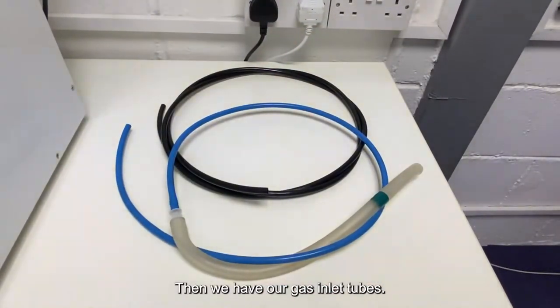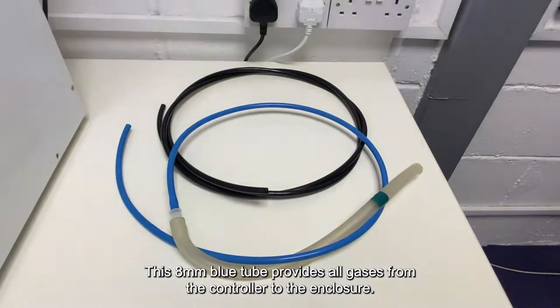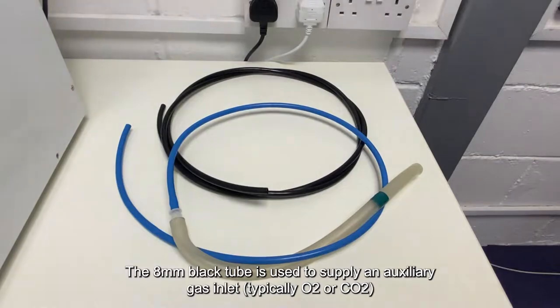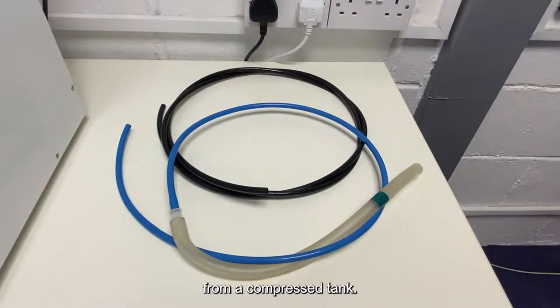Then we have our gas inlet tubes. This 8mm blue tube provides all gases from the controller to the enclosure, and the 8mm black tube is used to supply an auxiliary gas inlet, typically O2 or CO2, from a compressed tank.